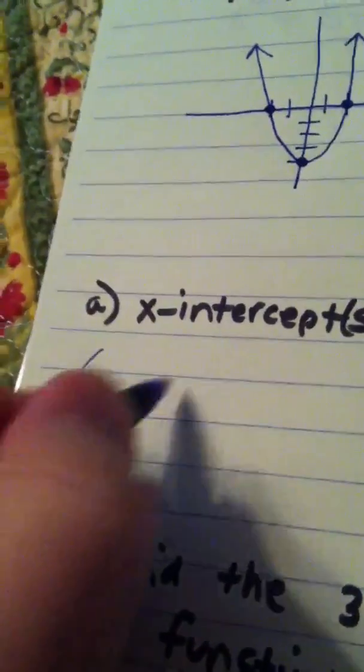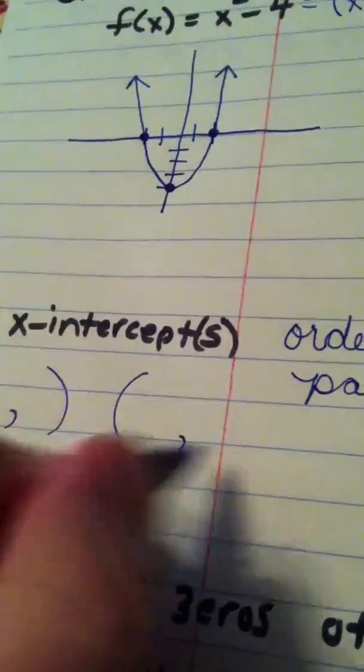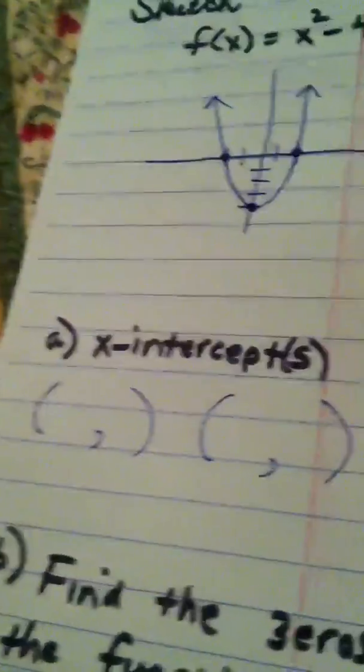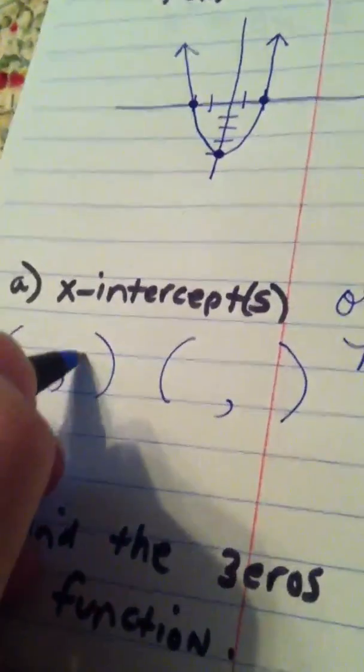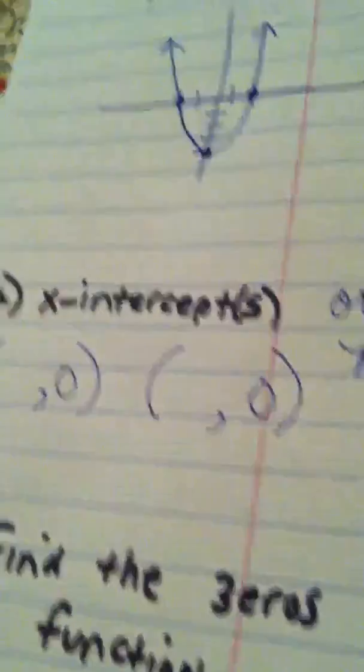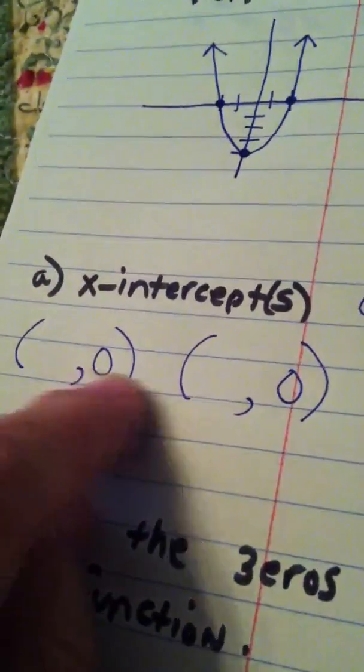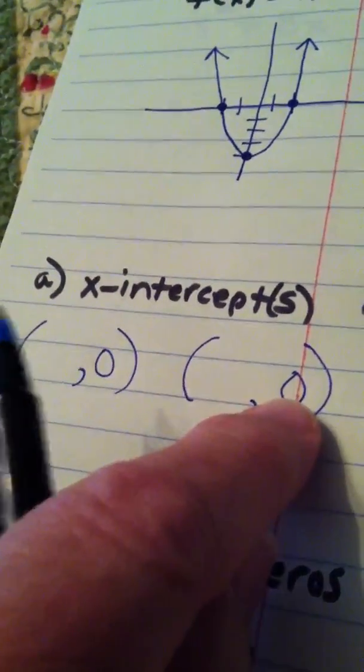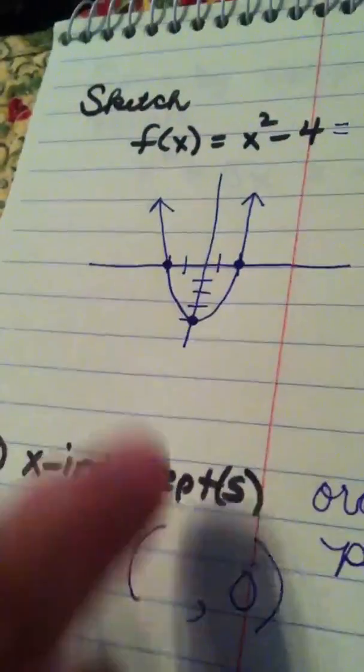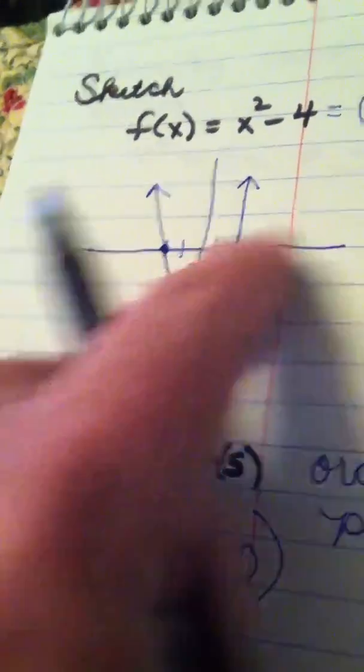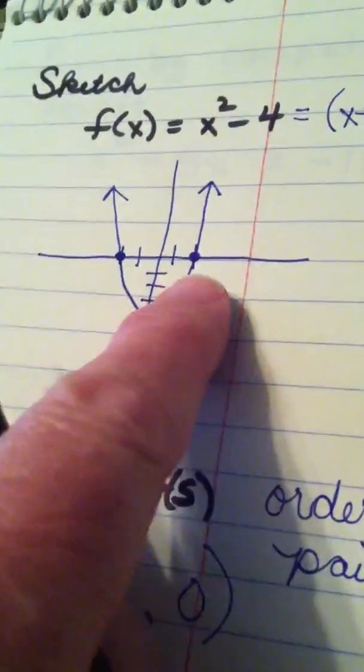So, I want to know the ordered pairs where the graph crosses the x-axis. Well, you automatically know if I'm on the x-axis, y is 0. So, I know that the back number in each of those ordered pairs is 0. And I can tell that the front numbers, pretty much by factoring and by looking at my graph,